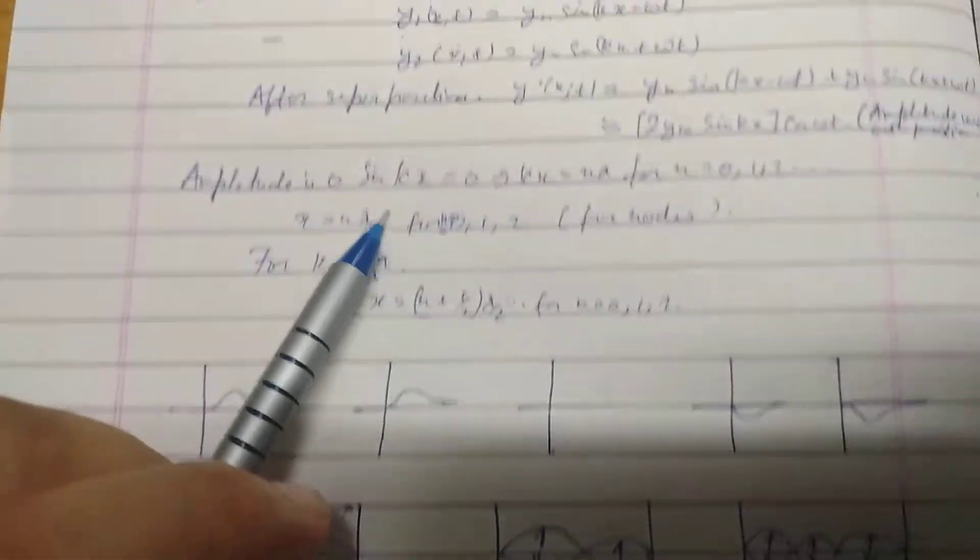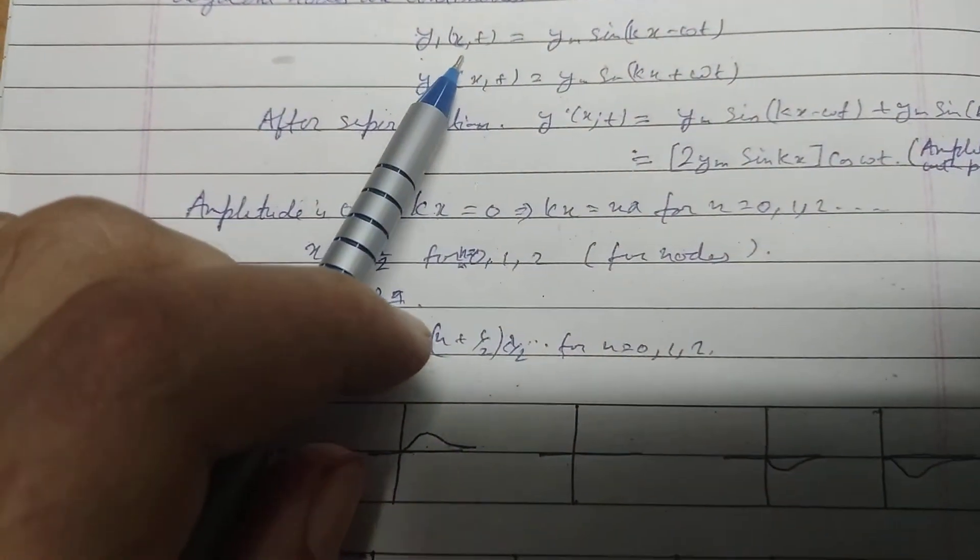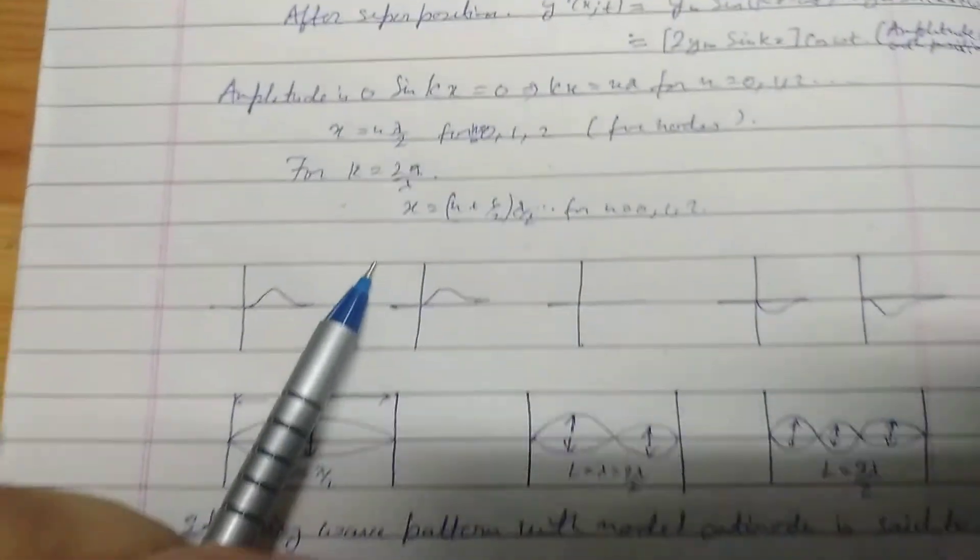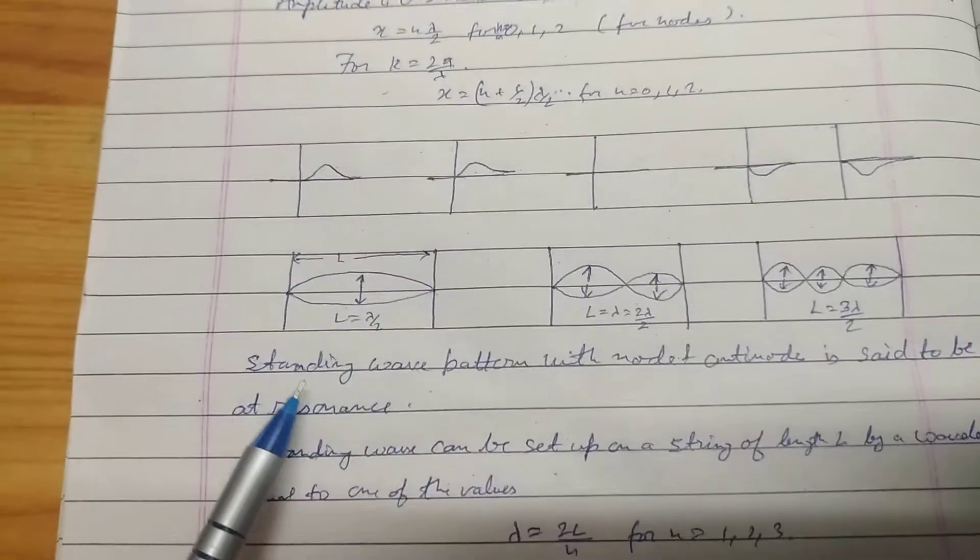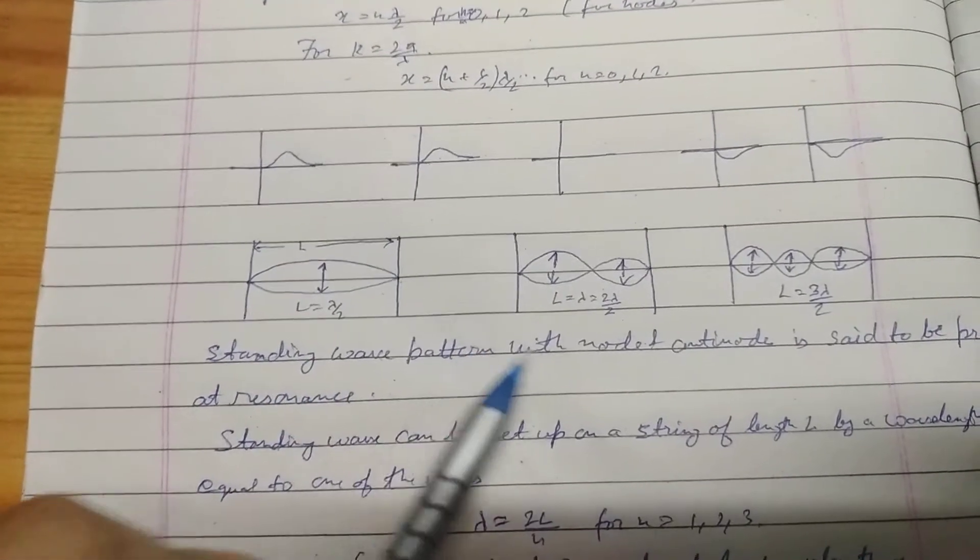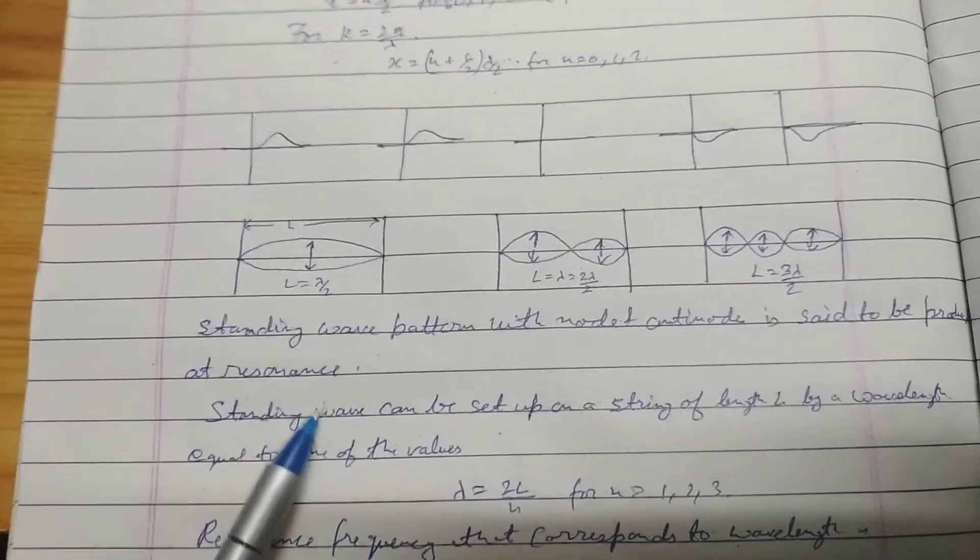The equation of these two waves can be regarded as y1(x,t) and y2(x,t). The standing wave patterns with nodes and anti-nodes is said to be produced at resonance.